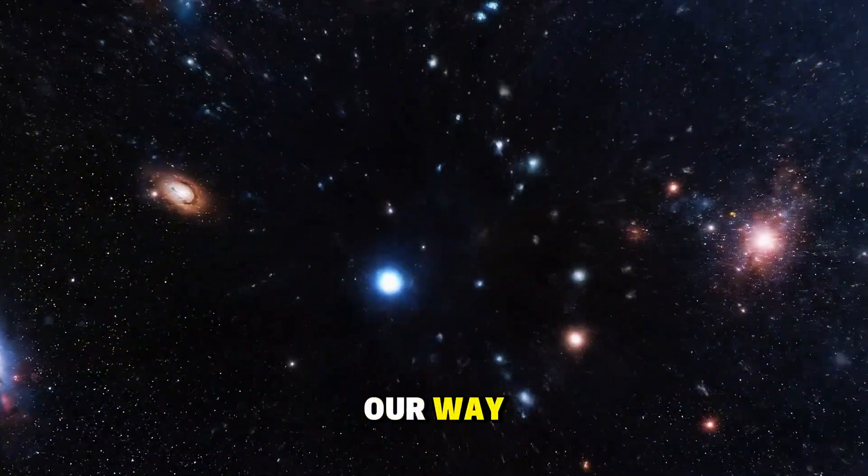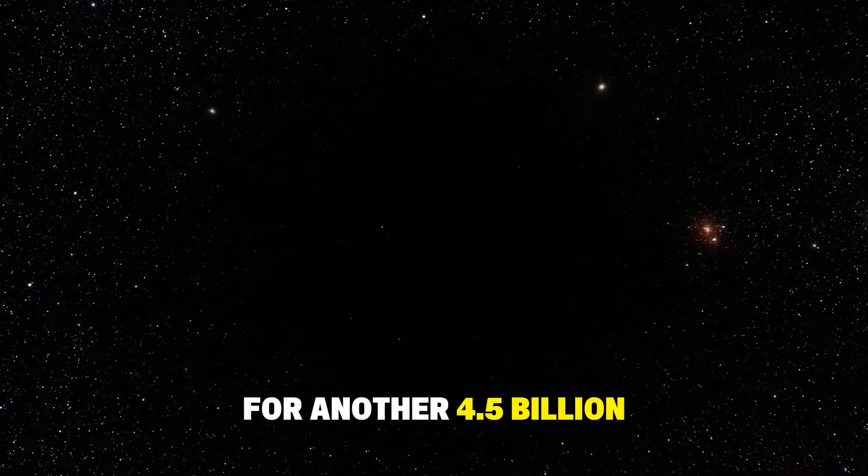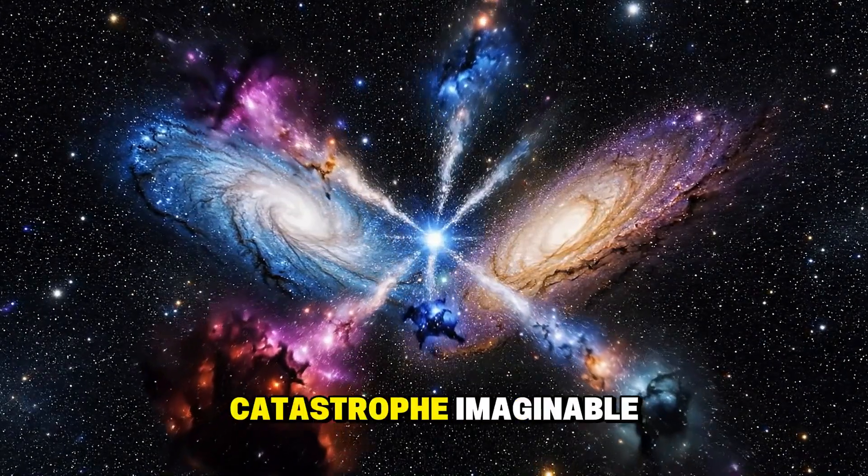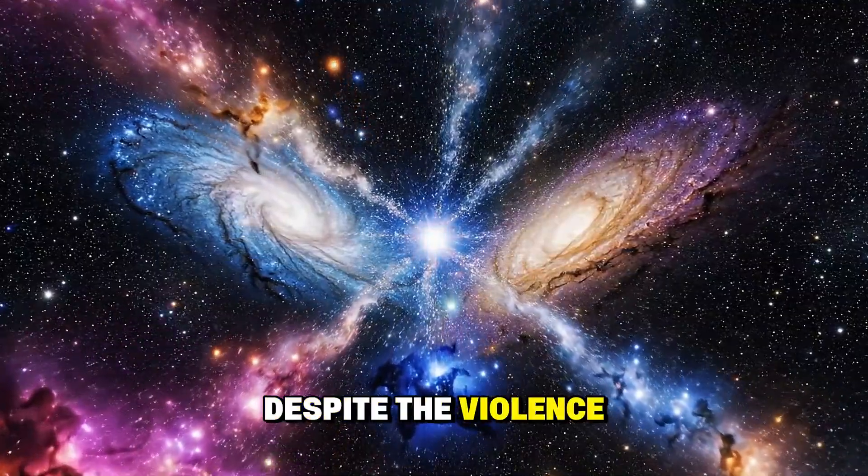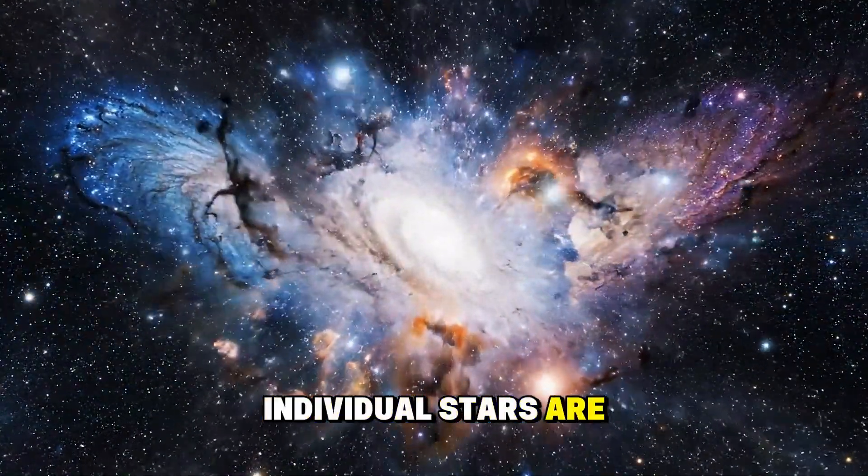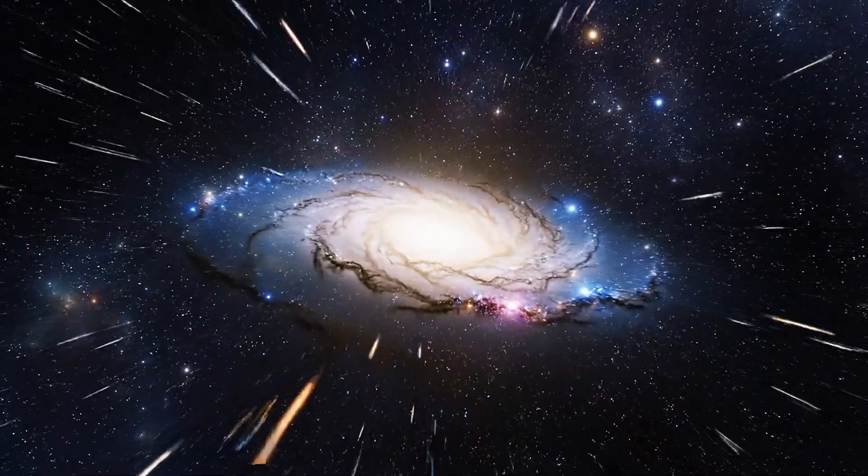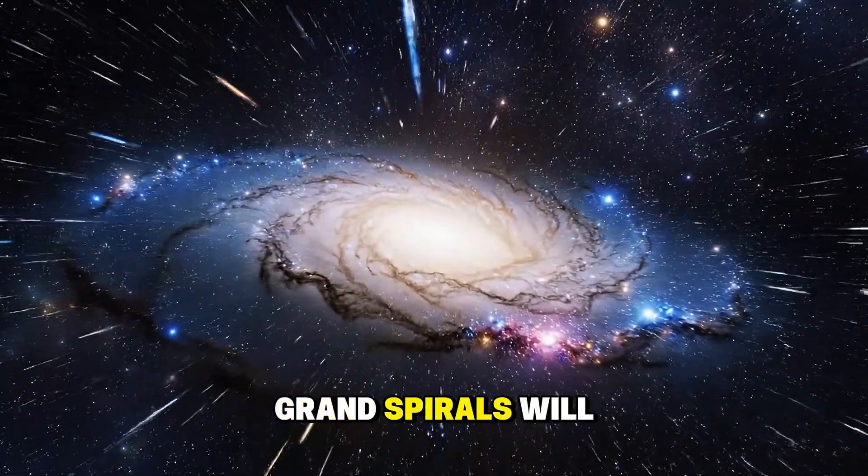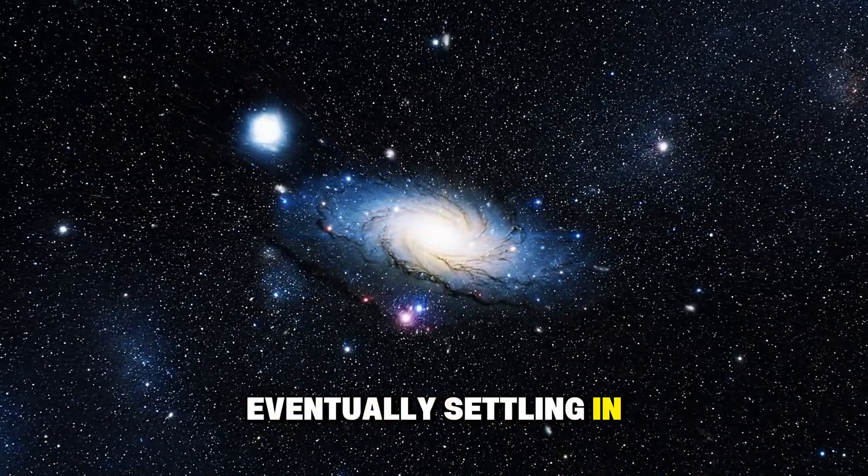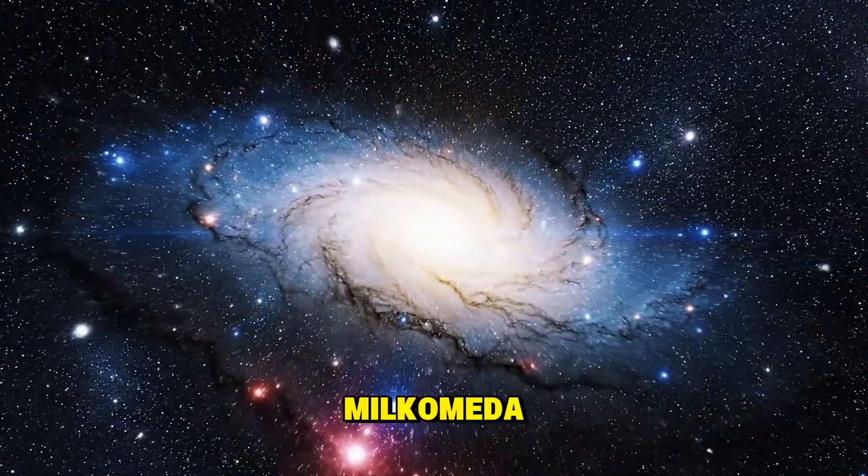And it's headed our way. Don't worry. The collision won't happen for another 4.5 billion years. And when it does, it will be the gentlest catastrophe imaginable. Despite the violence implied by the word collision, the distances between individual stars are so vast that stellar impacts will be virtually non-existent. Instead, these two grand spirals will waltz through each other over hundreds of millions of years, eventually settling into a single elliptical galaxy that astronomers have affectionately nicknamed Milcomeda.